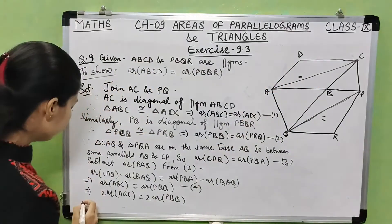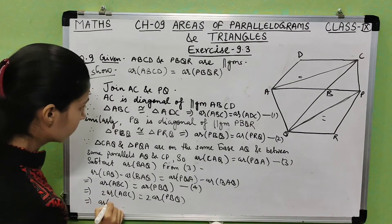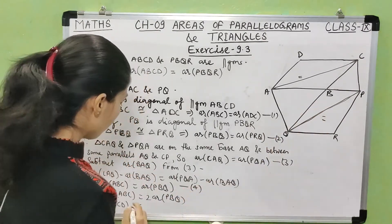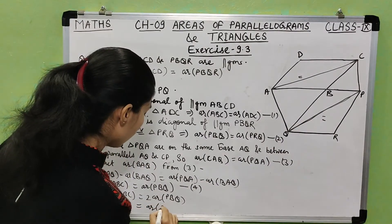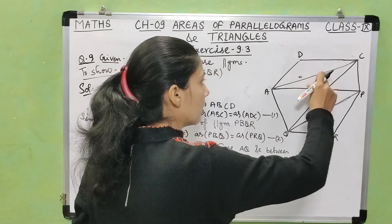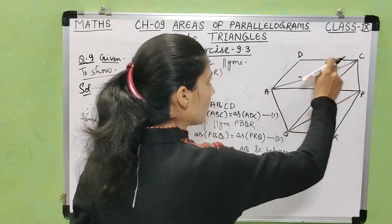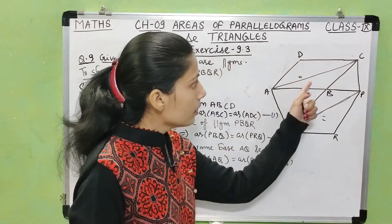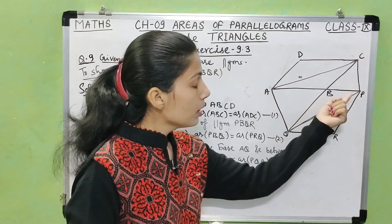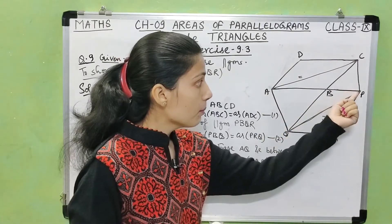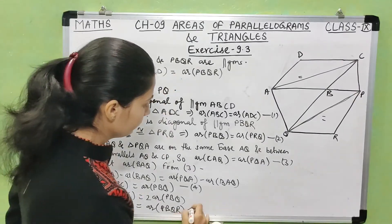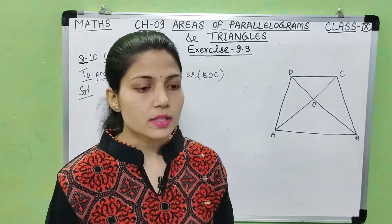Since the diagonal divides the parallelogram into two triangles of equal area, twice the area of triangle ABC is the area of parallelogram ABCD, and twice the area of triangle PBQ is the area of parallelogram PBQR. Since ABC equals PBQ, their twice values are also equal — therefore area of parallelogram ABCD equals area of parallelogram PBQR.